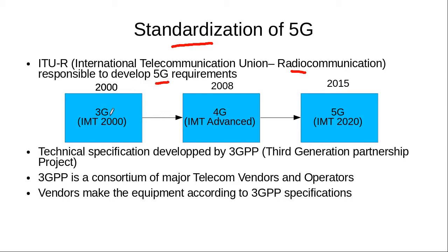For the 3G systems, in the year 2000, this organization developed its requirements as IMT-2000. In the year 2008, it developed the requirements of the 4G system as IMT Advanced. And in the year 2015, it developed the requirements of the 5G system as IMT-2020. We are most interested in the requirements as IMT-2020.